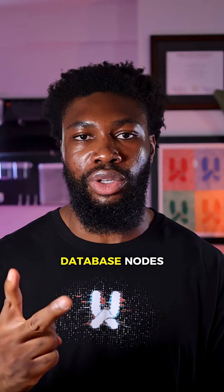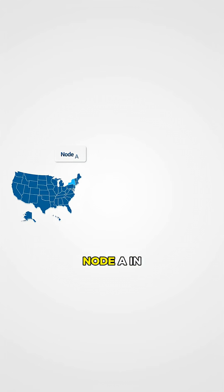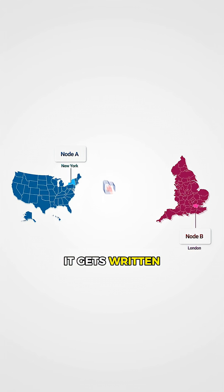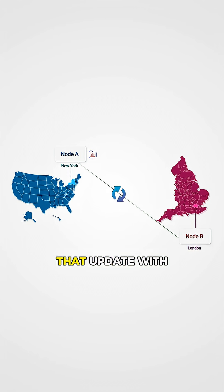Let's say we have a simple setup with just two database nodes: node A in New York and node B in London. When you update your data, it gets written to one of the nodes, which then syncs that update with the other node.